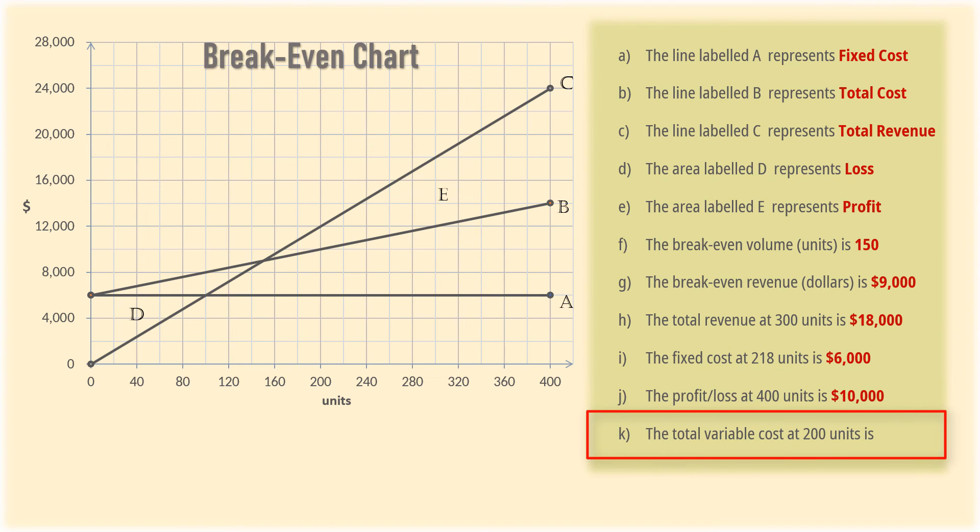For K, we want the total variable cost at 200 units. Recall that total cost equals fixed cost plus total variable cost. Thus, we can find the total variable cost by subtracting the fixed cost from total cost. Total cost at 200 units is $10,000, and the fixed cost is $6,000. Therefore, the total variable cost is $10,000 minus $6,000, and that gives $4,000.